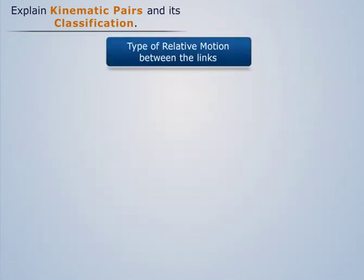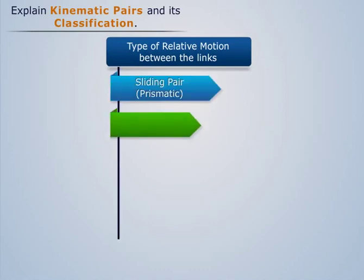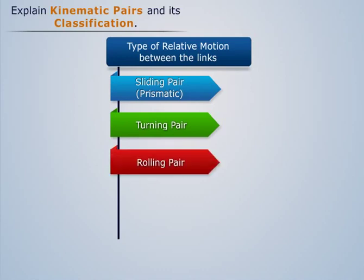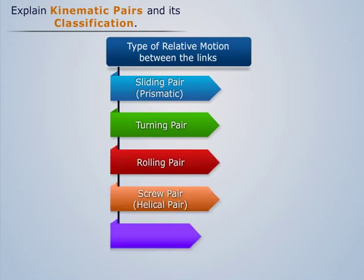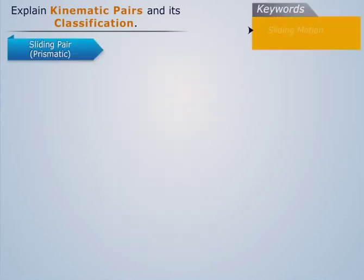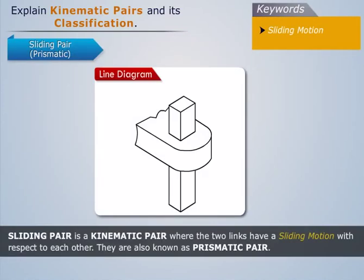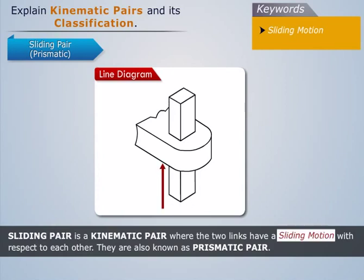On the basis of relative motion between the links, kinematic pairs can be classified into sliding pair, turning pair, rolling pair, screw or helical pair, and spherical pair. A sliding pair is a kinematic pair where the two links have a sliding motion with respect to each other.